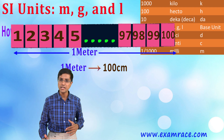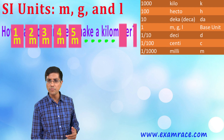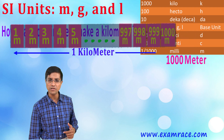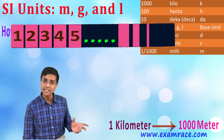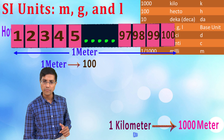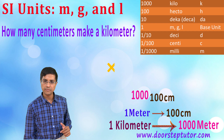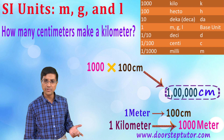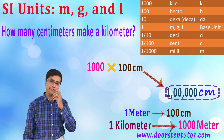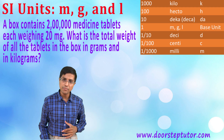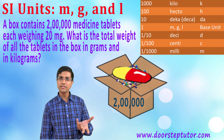There are 100 centimeters in one meter. Combining these two: there are 1000 meters in one kilometer, and each of those meters has 100 centimeters, so 1000 × 100 = 100,000. We put commas to make it easier to read, and the answer is one lakh centimeters in one kilometer.